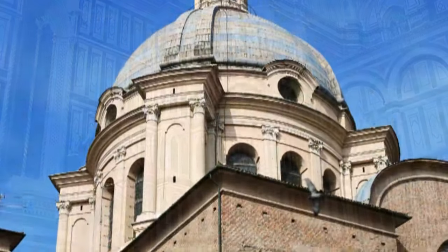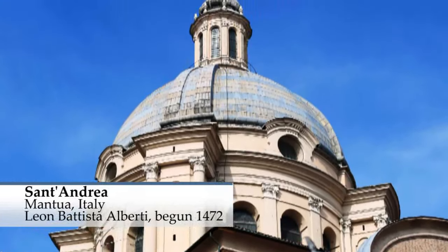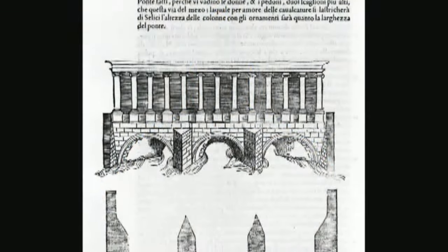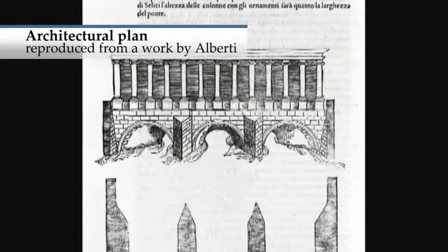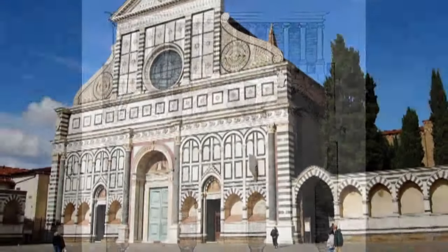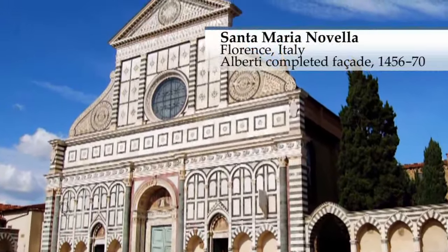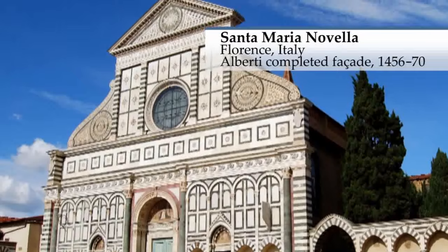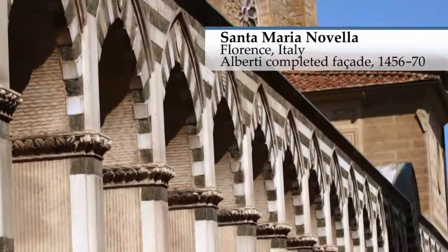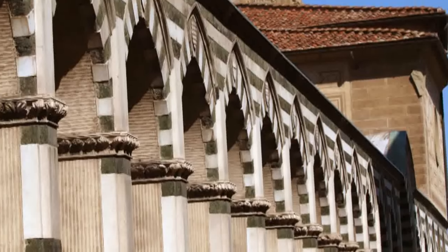Leon Battista Alberti was another influential mind behind Renaissance architecture in the 15th century. His ten books on architecture became a bible for the craft. Alberti created the facades of the Santa Maria Novella and the Palazzo Riccardi, both in Florence — noteworthy for their proportionality and perfect sense of measure.